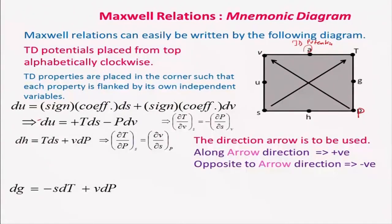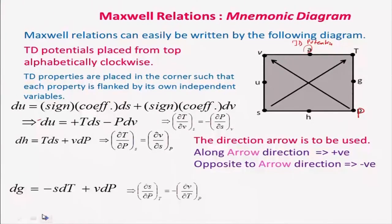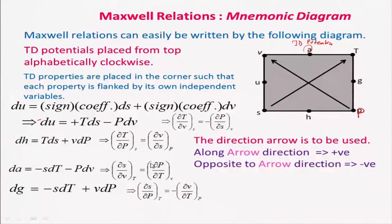For the Gibbs function G, the independent variables are P and T. For T the sign is negative with coefficient S, so it is −S dT, and for P the sign is positive with coefficient V. So dG = −S dT + V dP. Similarly, for Helmholtz function dA = −S dT − P dV, from which one can also get the Maxwell relationship.